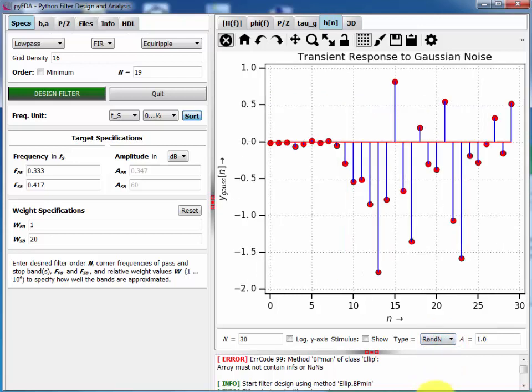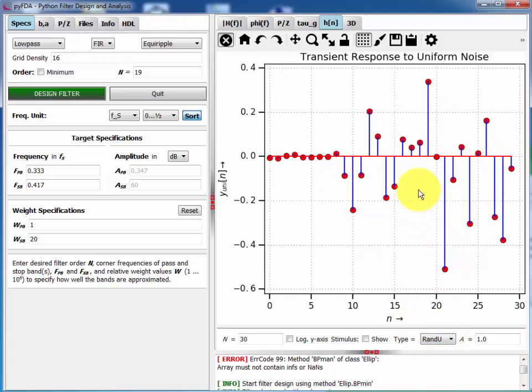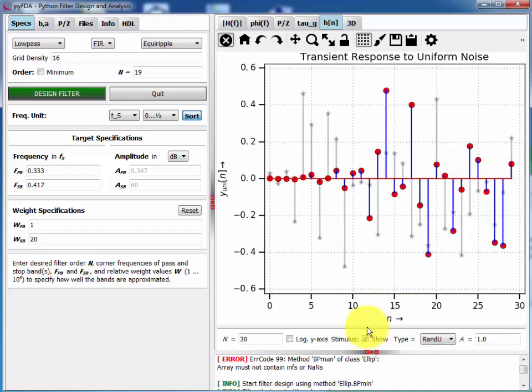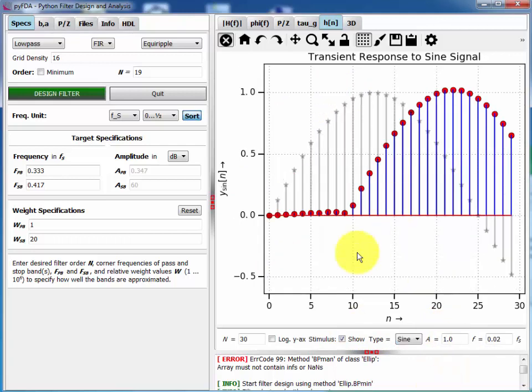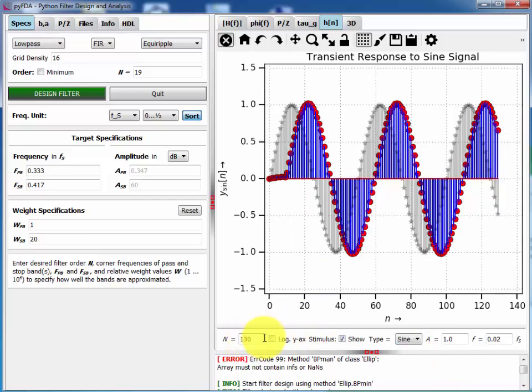You can also have a look at how this filter responds to normal, random or uniformly distributed random formats. And by clicking on Show, you can display your stimulus signal. Maybe this makes more sense for a sinusoidal signal. So here you also get a good view on the group delay of this filter.